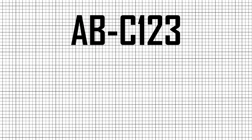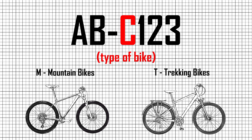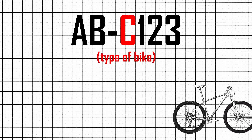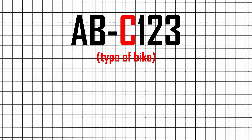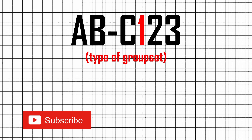The third letter, C, specifies the type of bike: M for mountain bikes, T for trekking bikes. The first number, 1, will be between 2 and 9, and it indicates which groupset the part belongs to. The higher the number, the better quality of groupset.